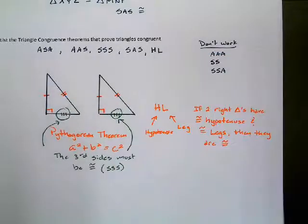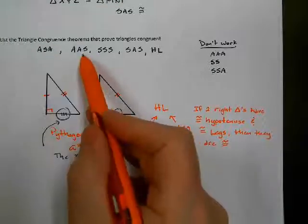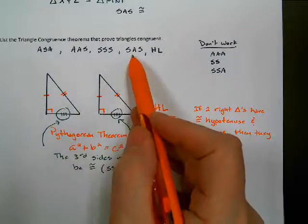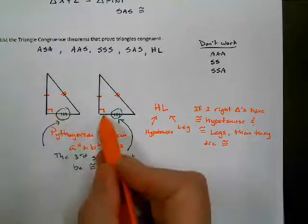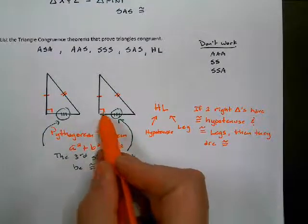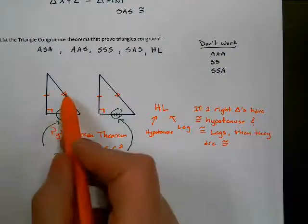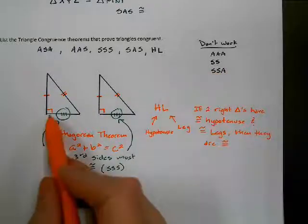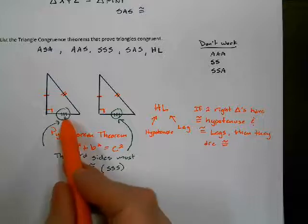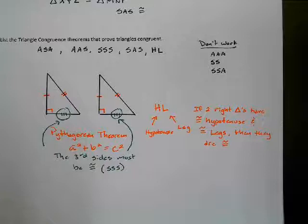So what does HL say? If two right triangles have congruent hypotenuses and congruent legs, then they are congruent. This is the one time Angle-Side-Side works, and only in right triangles — we call it Hypotenuse-Leg, HL. So there are actually five congruence theorems: Angle-Side-Angle, Angle-Angle-Side, Side-Side-Side, Side-Angle-Side, and Hypotenuse-Leg. Hypotenuse-Leg is when you have right triangles, the hypotenuses are congruent, and one of the legs is congruent. Even though it looks like Side-Side-Angle, in this instance it works because we can use the Pythagorean theorem to prove the last side is congruent. All right, that's all I got. Enjoy.